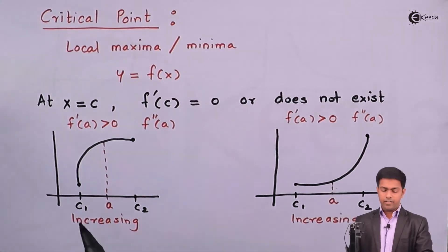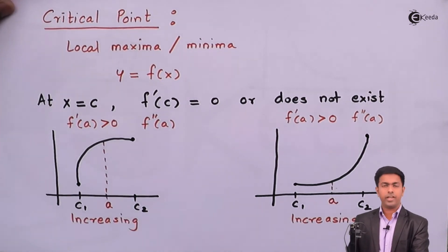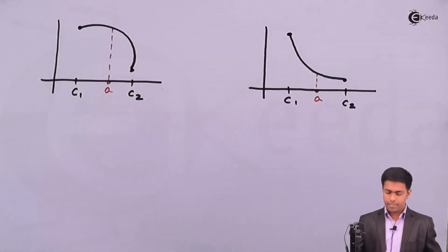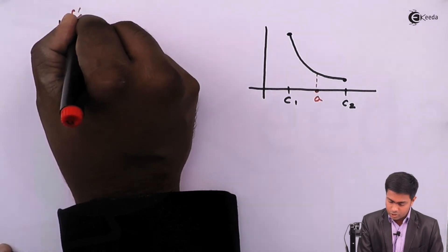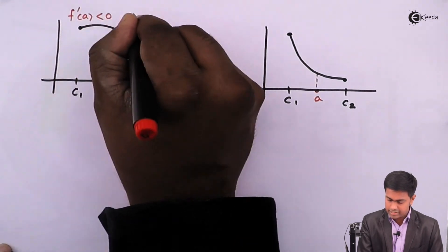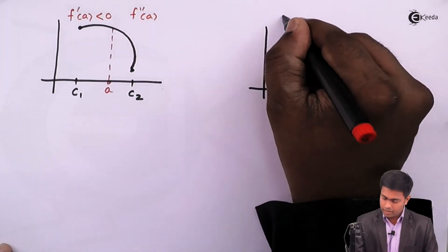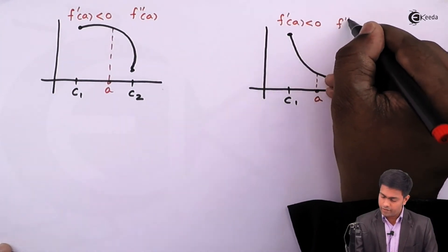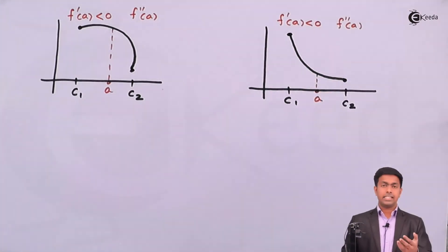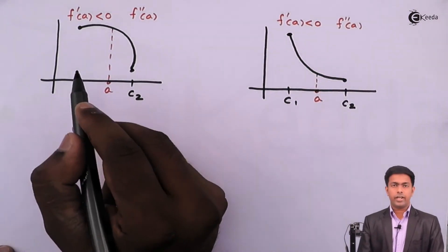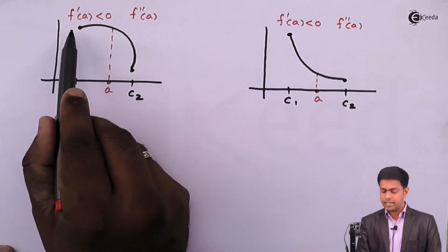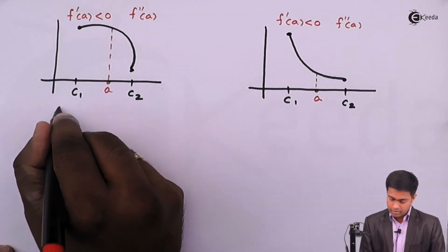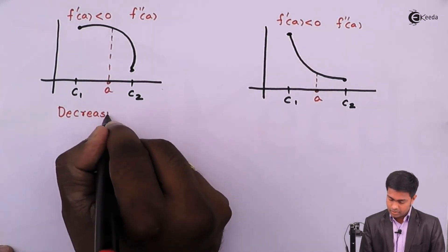Whenever the value of f'(a) is less than zero, we say that the curve has a decreasing nature. So when f'(a) is less than zero, we get a decreasing curve from c1 to c2.